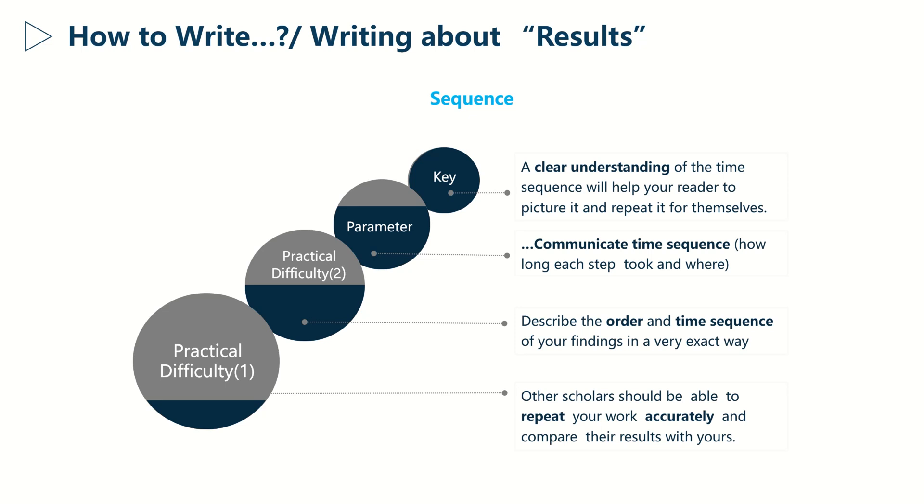How to overcome these two difficulties? Simply by using words and expressions that communicate time sequence. We'll see an example later. Keep in mind that the key is to give the reader a clear understanding of your work to the extent of repeating it without difficulties. As long as you do that, you're good.